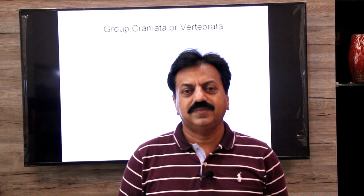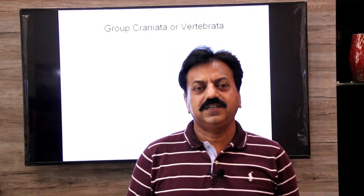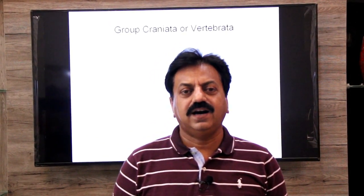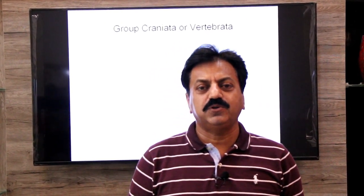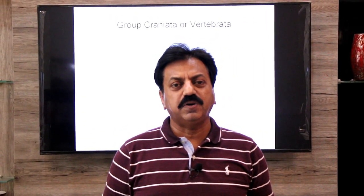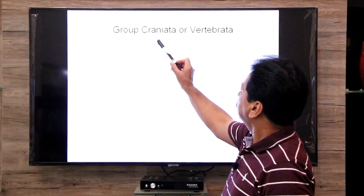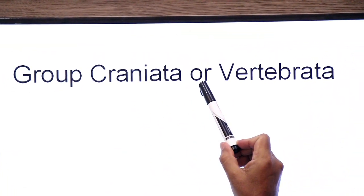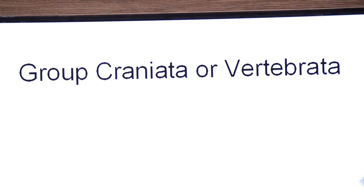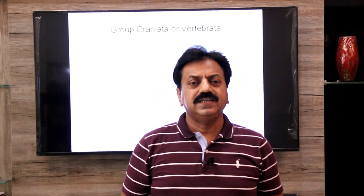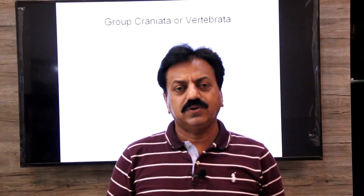Assalamu alaikum, namaste, hello dear students. Yesterday we discussed group Acraniata, also called Protocordata. Today we will discuss the second group of chordates: group Craniata, also called Vertebrata. Craniata is named as such because they have a cranium — a brain box.